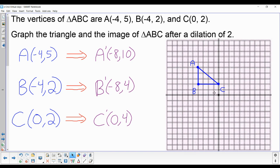A is at (-8, 10), and I graph that point. That's the image of A. B is at (-8, 4). So I go over left 8, I go up 4, and I graph point B.